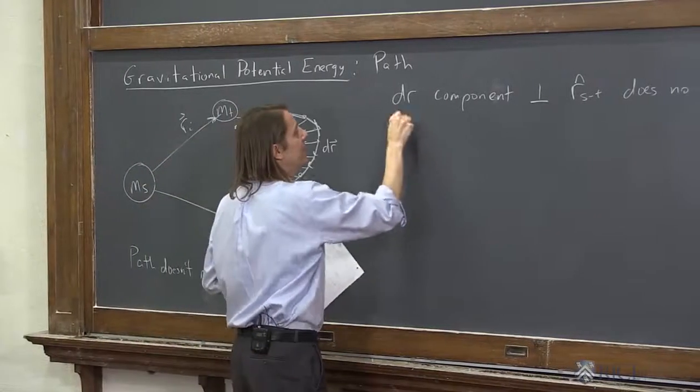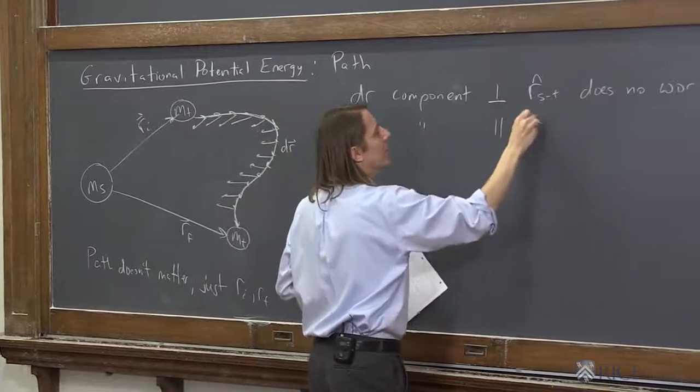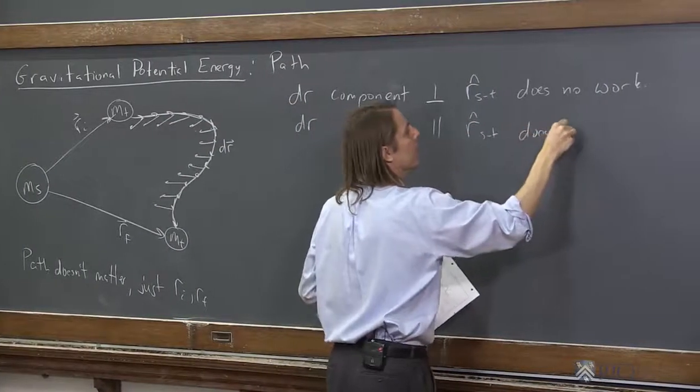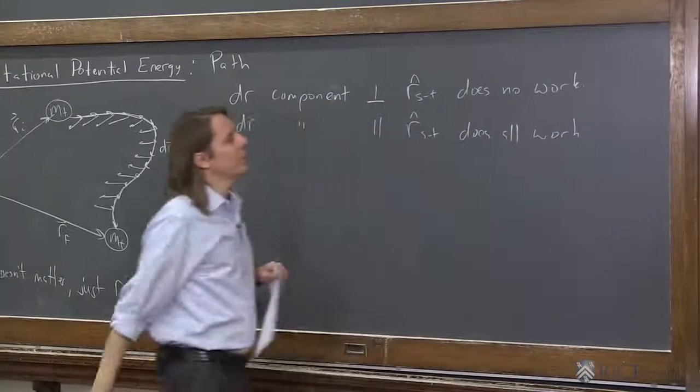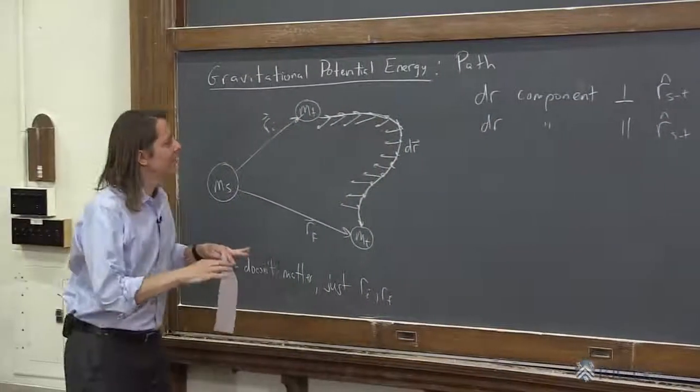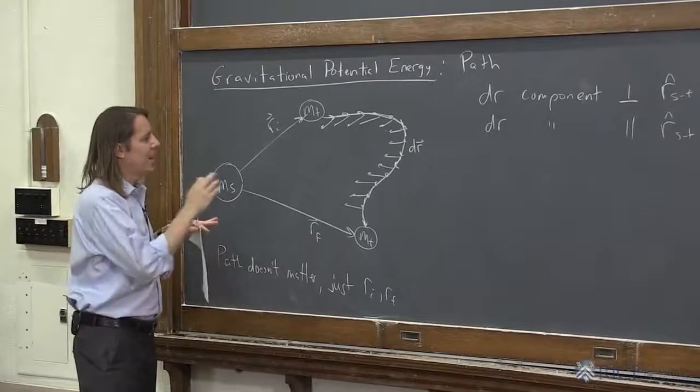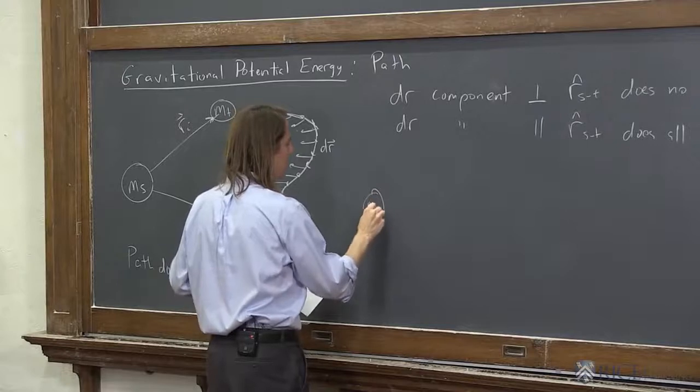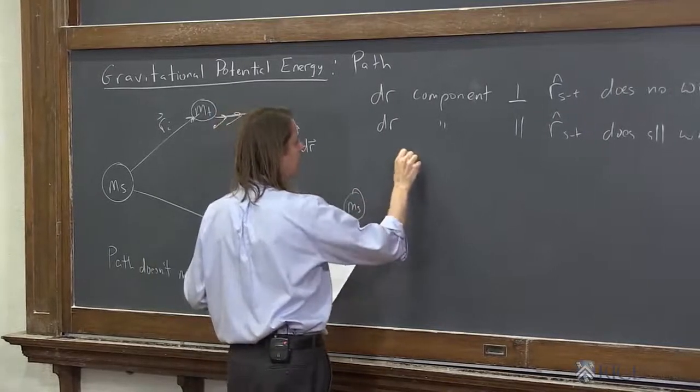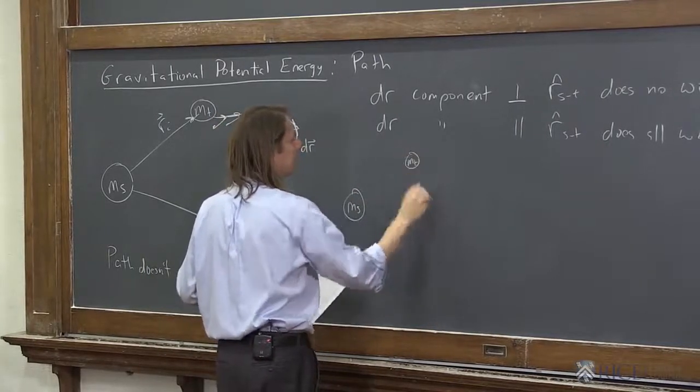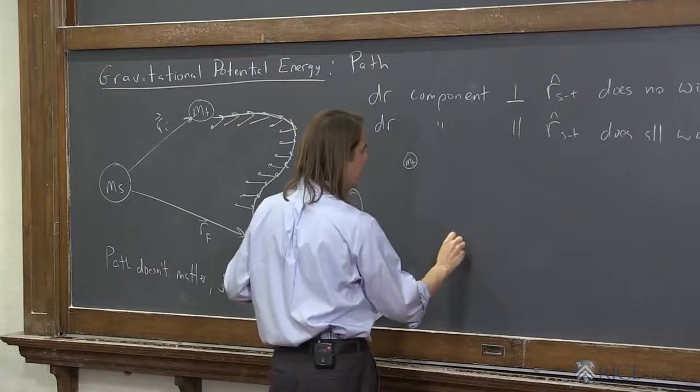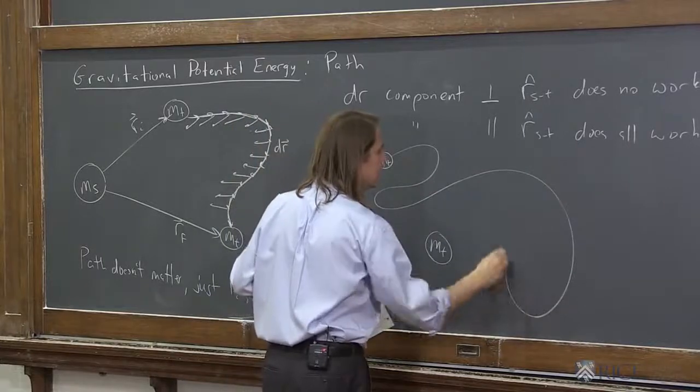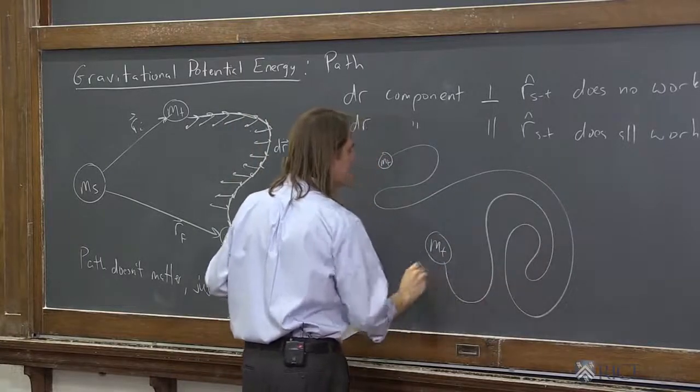So one trick you can do to help you see this better is to not think of the complicated path. Think of it as the simpler path. So here is the source mass. And say you started out here as the test mass. And say you ended up out here as the other test mass. And you took the most complicated possible trajectory like that.